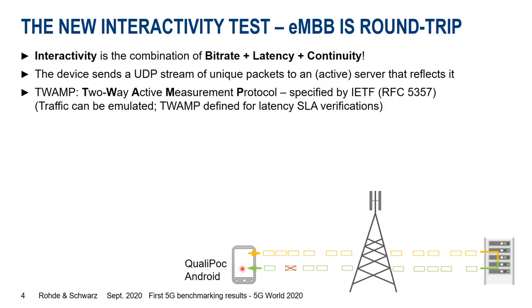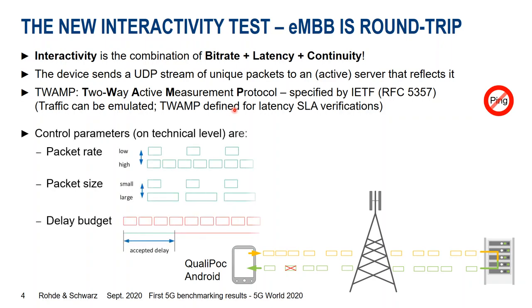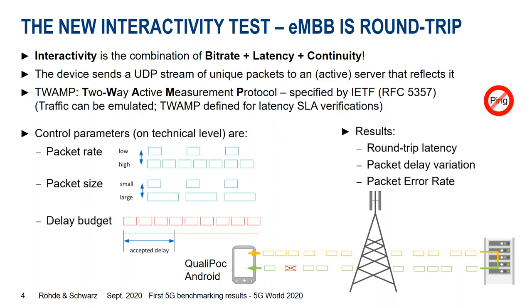Our QualiPoc Android software running on commercial smartphones sends a UDP stream of unique packets over the 4G or 5G network to a server, which immediately reflects the packets back. The protocol used on the server side is called TWAMP — Two-Way Active Measurement Protocol, specified by the IETF. We are not using ping here because ping cannot emulate the traffic pattern and is very limited in accuracy, particularly for low latencies. TWAMP is defined for service level agreement verification of low latencies. The result is roundtrip latency, packet delay variation, and packet error rate.